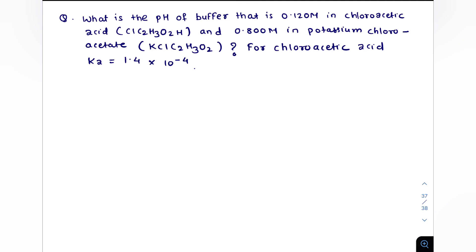Now we have this question, this is a buffer in which the weak acid is chloroacetic acid and salt is potassium chloroacetate. So we have the concentration of chloroacetic acid which equals 0.120 molar and its salt potassium chloroacetate which is 0.800 molar. Ka value for chloroacetic acid is 1.4 × 10⁻⁴.